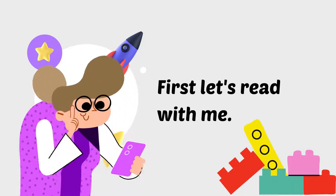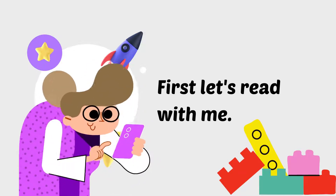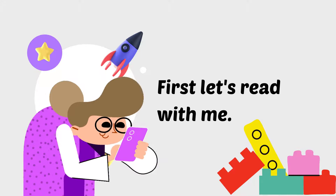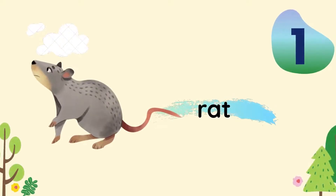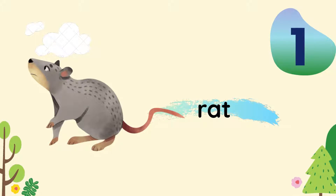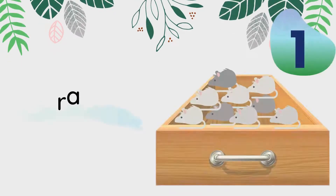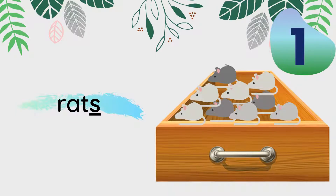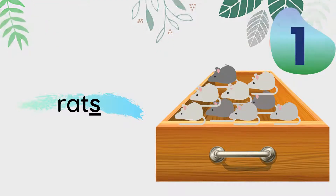First, let's read with me. We're going to do some recap about pet show animal vocabulary. Number 1: rat. If we only have one animal, the spelling is 'rat'. But if we have more than one, we add S at the end and it becomes 'rats'.